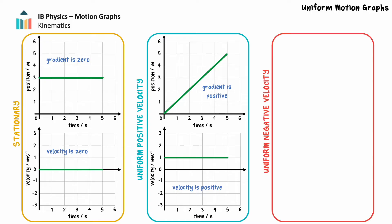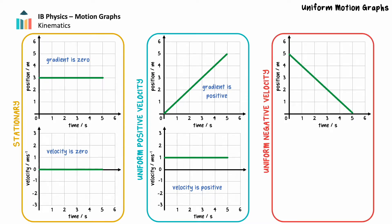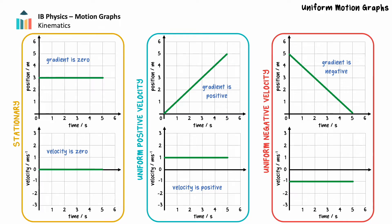Finally, let's consider an object moving with uniform velocity in a negative direction. The position time graph will be a straight line with a constant negative gradient, which is equal to the object's velocity. The corresponding velocity time graph will again have a gradient of 0, but now the vertical axis value of the graph will be negative, because the object's velocity is negative.